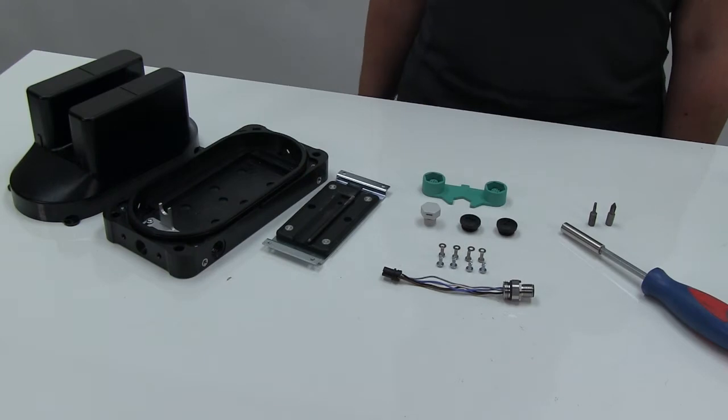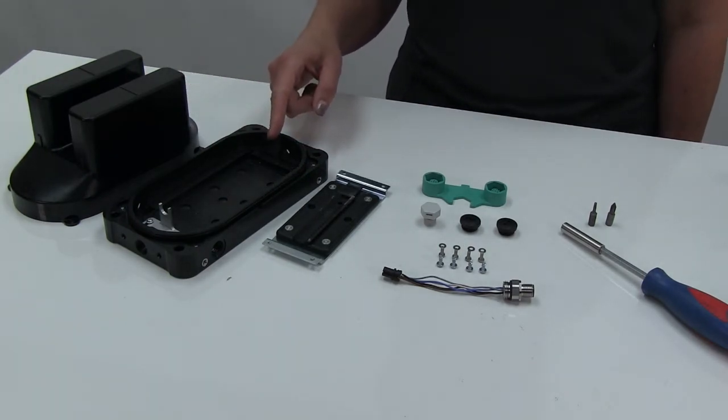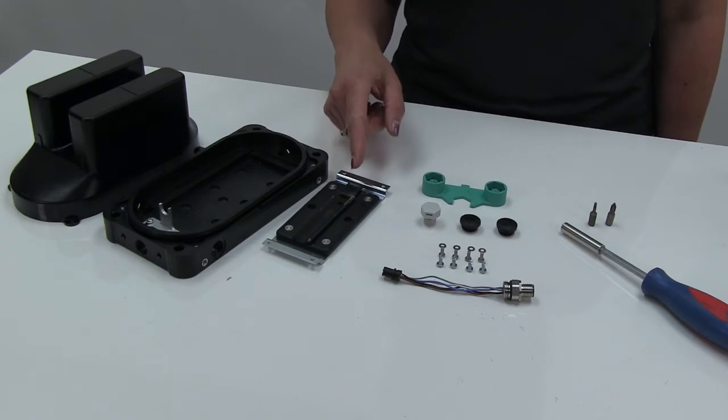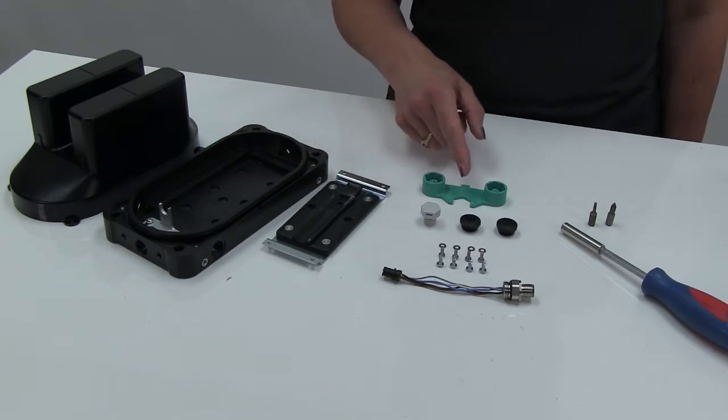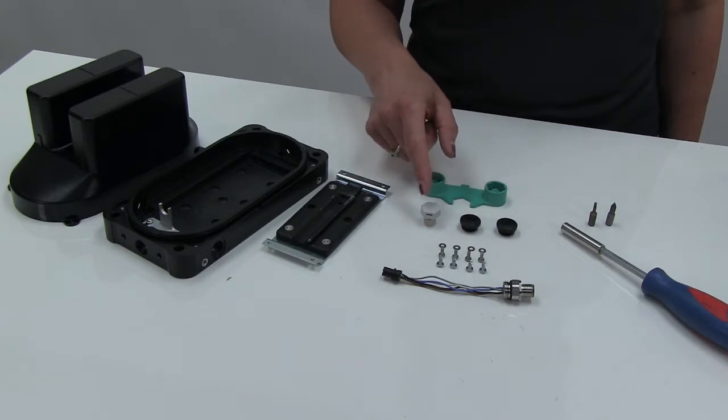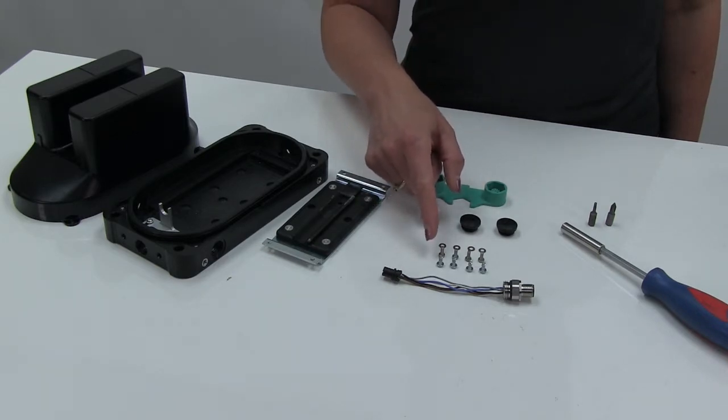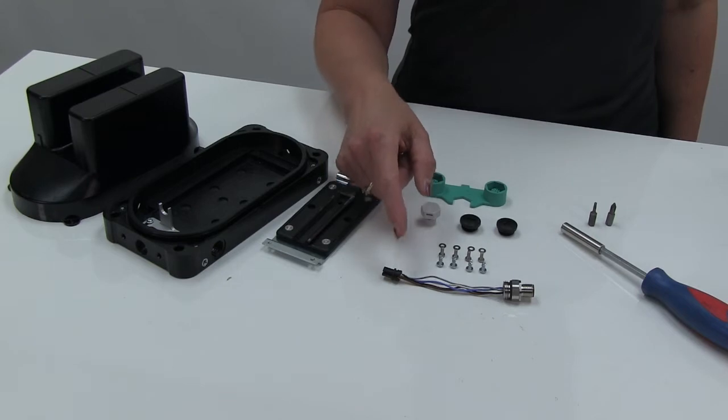The Posi-Track Shield comes with the following items: the cover, the main housing, the mounting plate, the multi-tool, two blind plugs, and a pressure release plug, some mounting hardware, and a connector assembly.